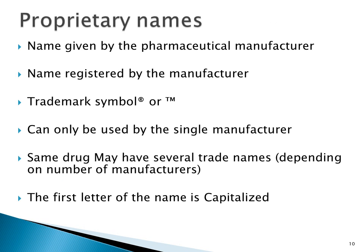Proprietary names are the names given to a drug product by the pharmaceutical manufacturer, meaning this name has been registered by that manufacturer. When writing proprietary names, they usually come with a trademark symbol — the R in a circle, or TM — written at the top right-hand corner of the product name. This name can only be used by that single manufacturer. For example, if a manufacturer calls their paracetamol 'Adegoke,' no other paracetamol can use that name. The same drug can therefore have several trade names depending on the number of manufacturers. Also note that for proprietary names, the first letter is always capitalized.